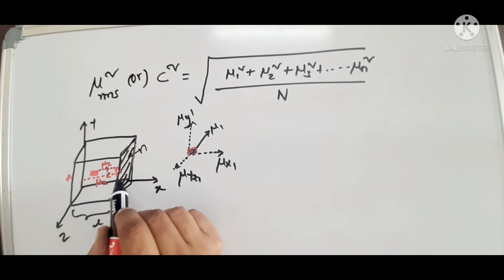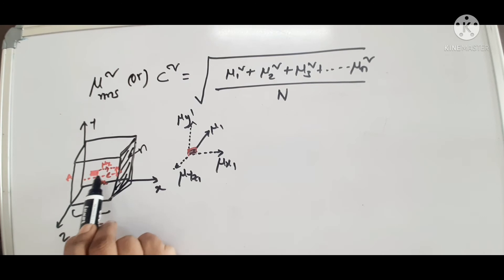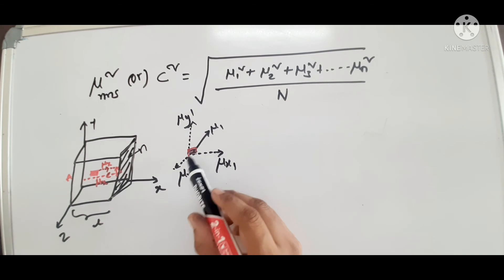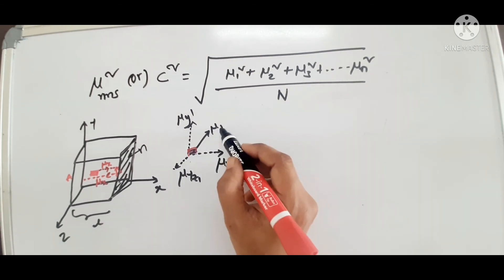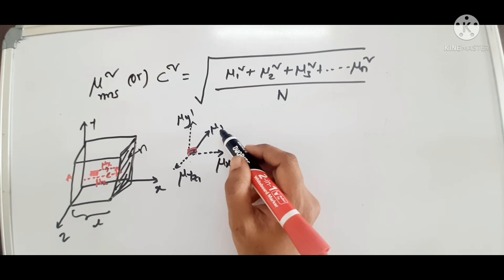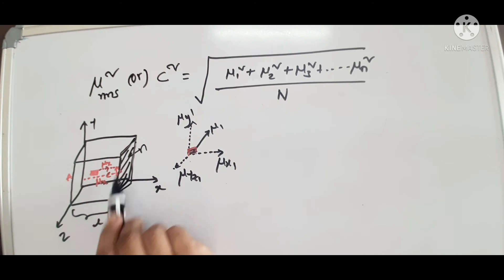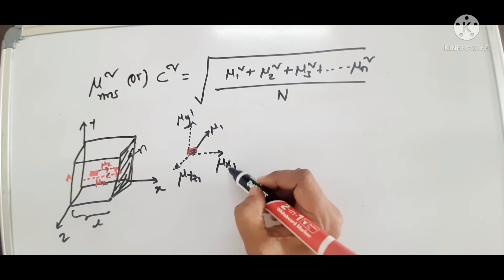If you consider the plane, the gas molecule in different directions will collide. If you consider the atom, the molecule has speed mu. This mu is the speed or velocity with which the atom is colliding the surface. The speed mu will be resolved into directions: mu x1, mu y1, mu z1.